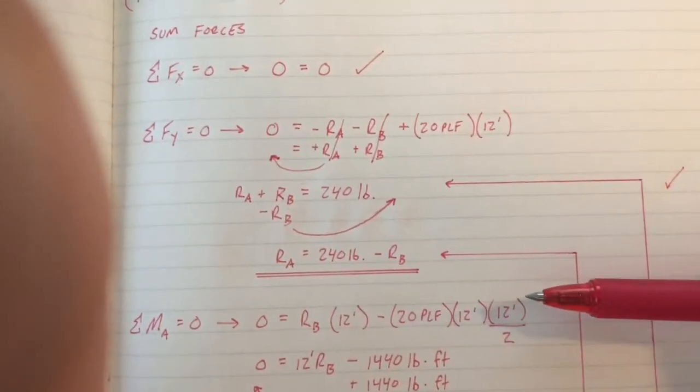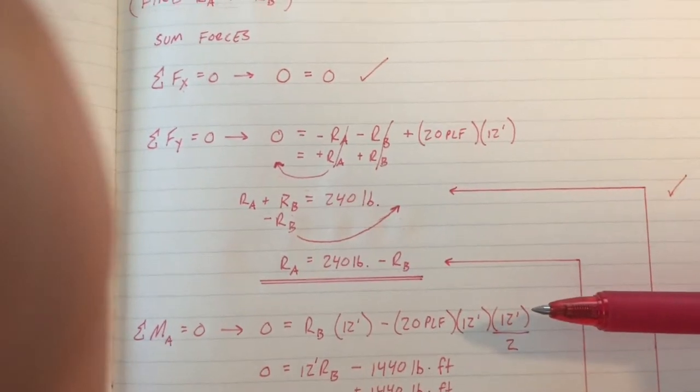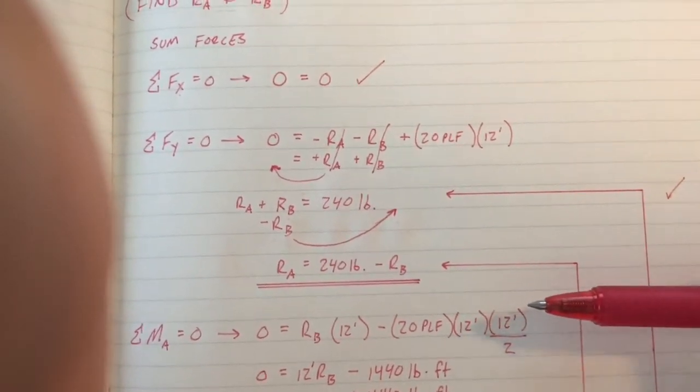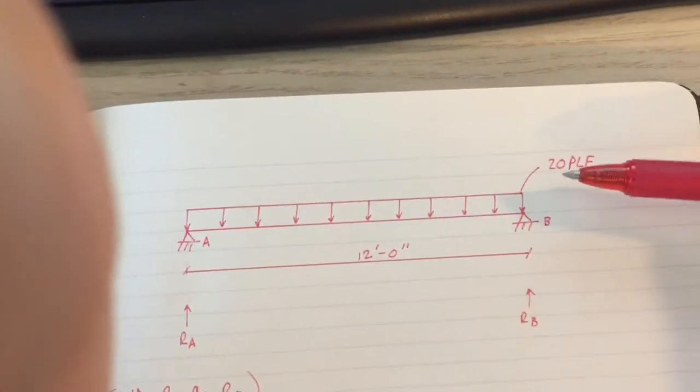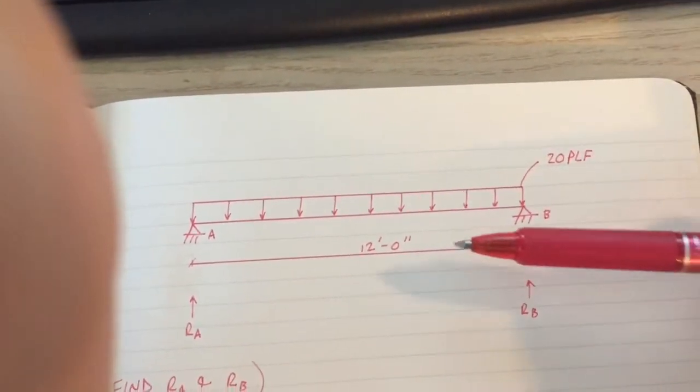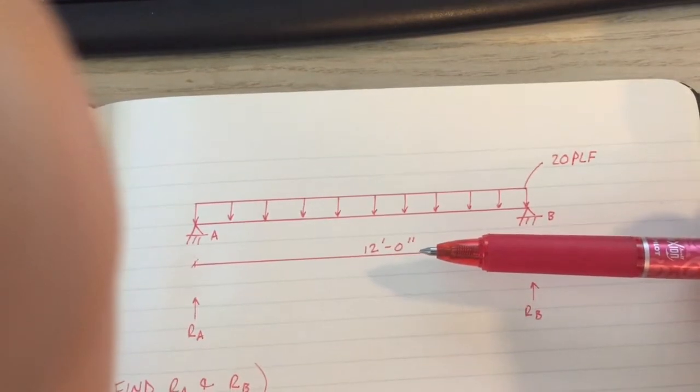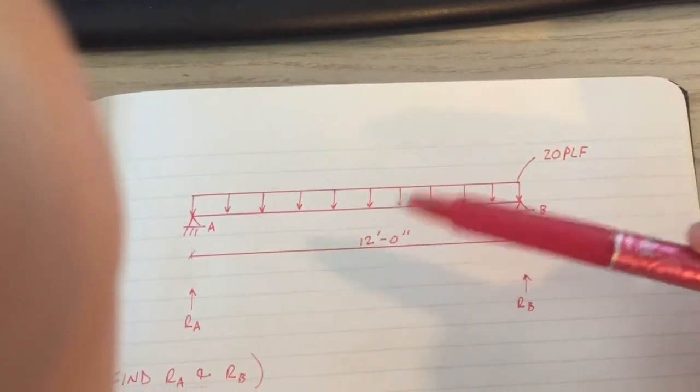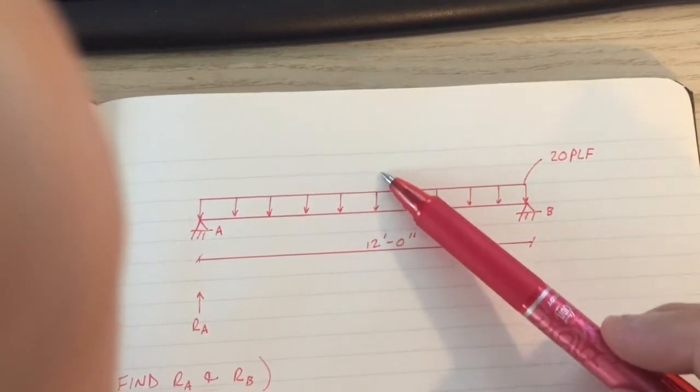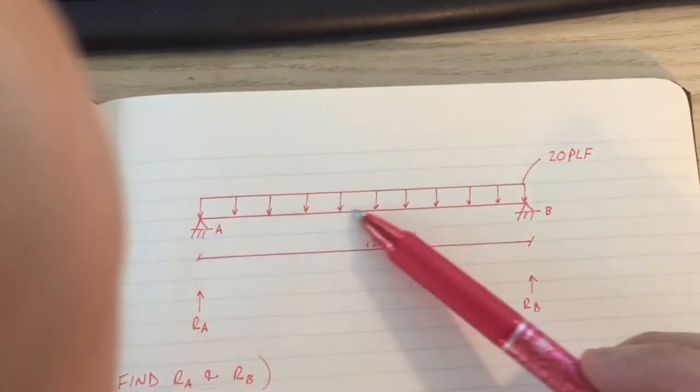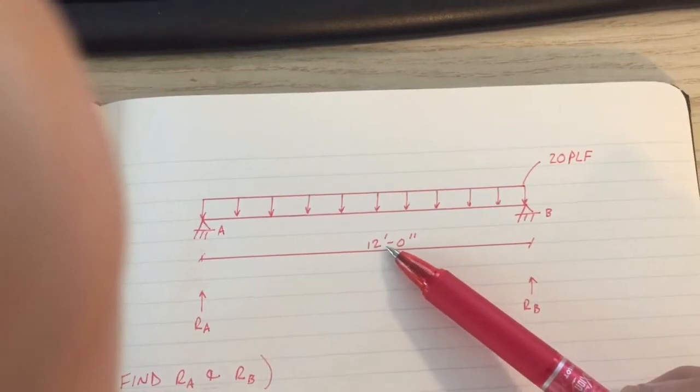Its perpendicular distance is the center point of that force, which is 12 feet divided by 2. So you have your force, which is 20 times 12, multiplied by its perpendicular distance, which is halfway between its force to point A, which is 12 divided by 2.